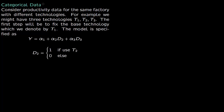Sometimes we need categorical data or dummy variables. These are important for coding information which can only be coded with 0 or 1. For example, if you want to analyze productivity for male and female, you have to code them. Similarly, consider productivity data for the same factory which uses three different technologies, named T1, T2, and T3.